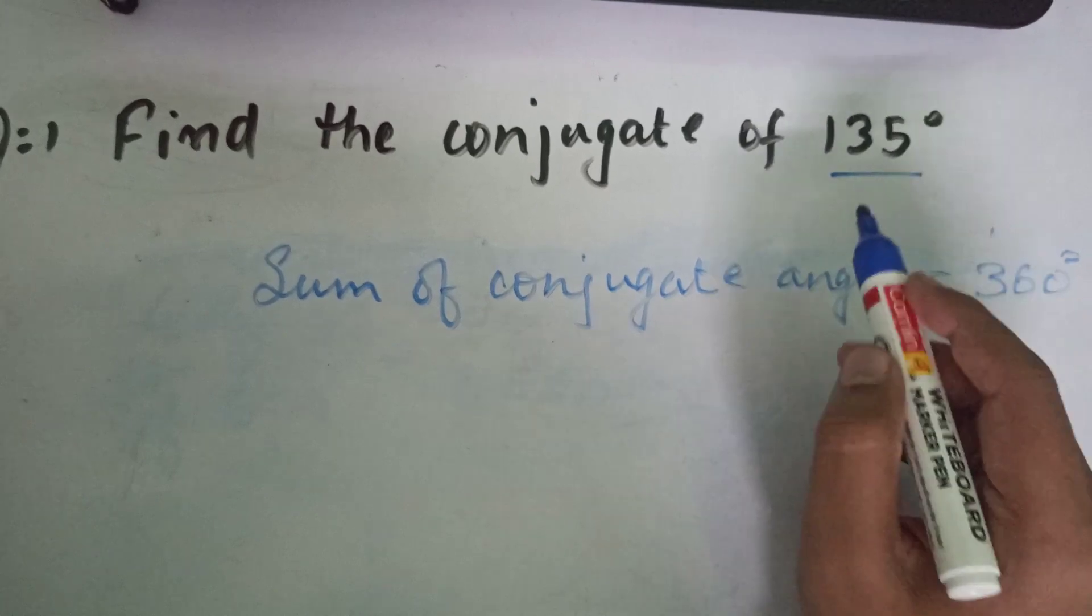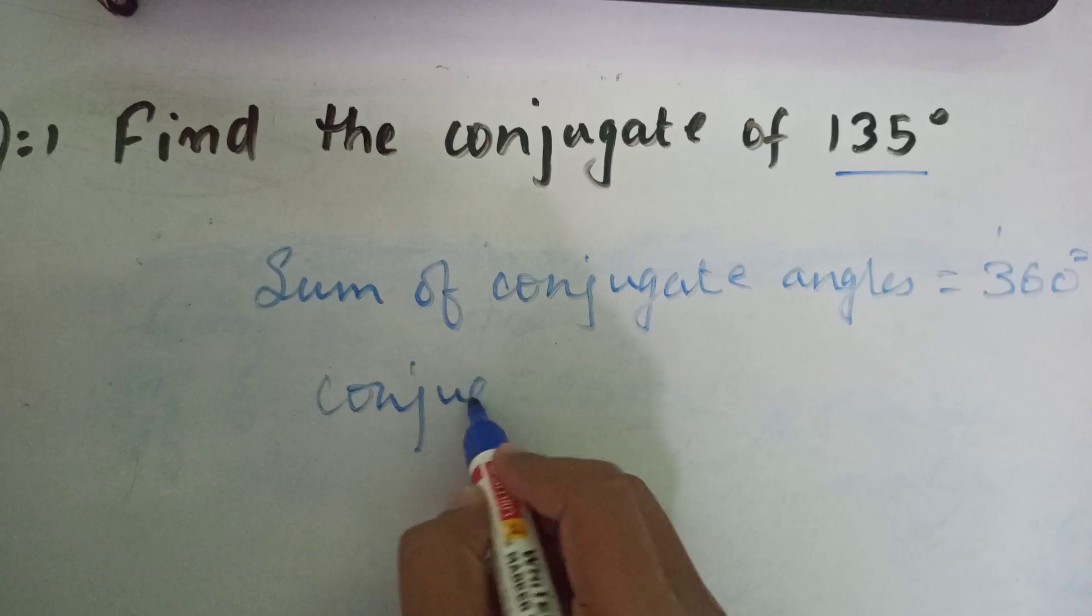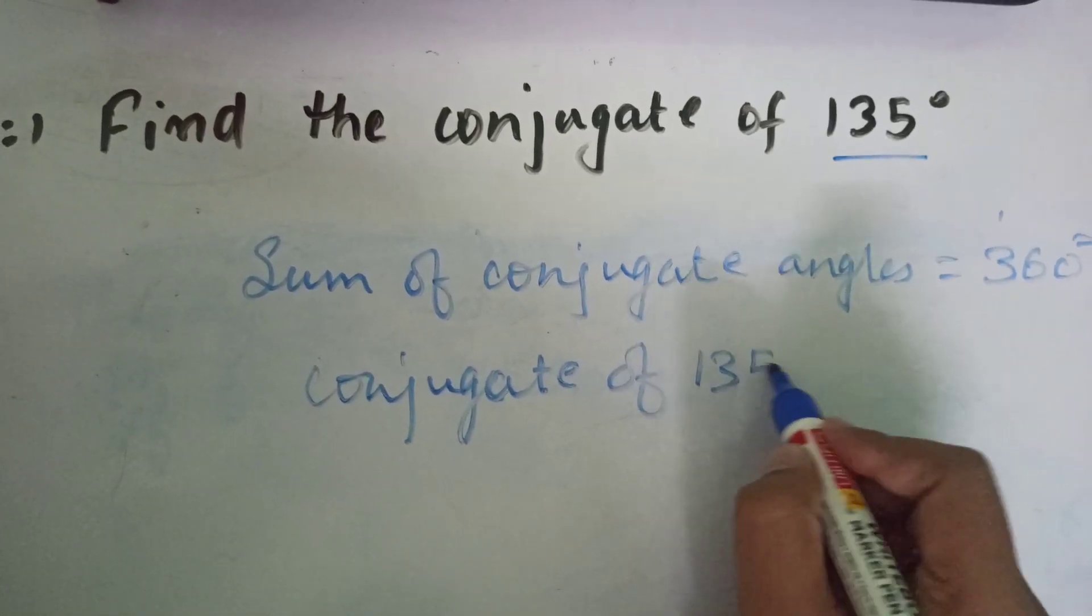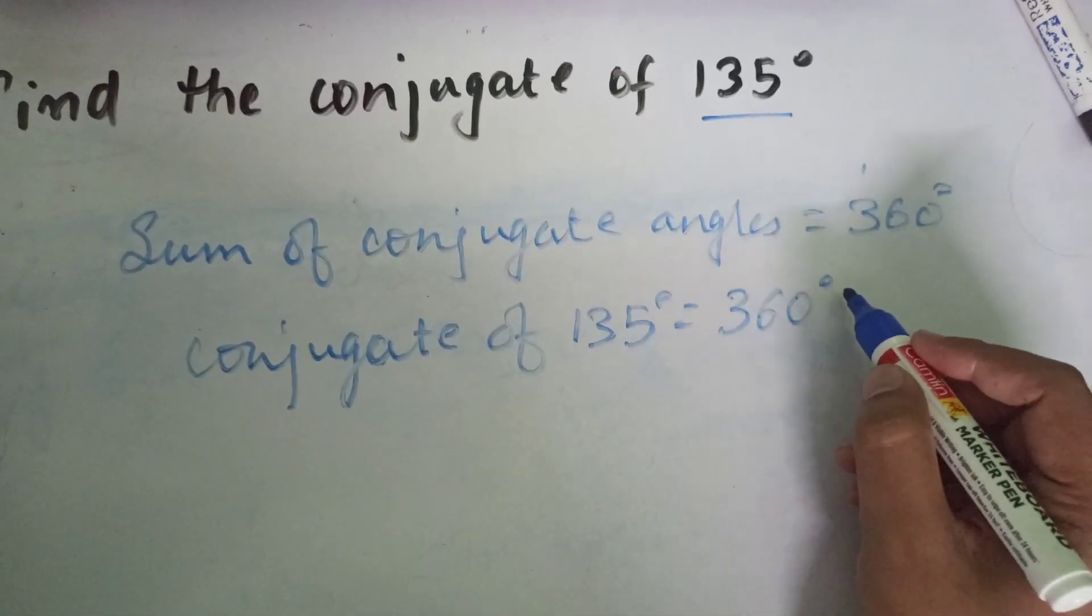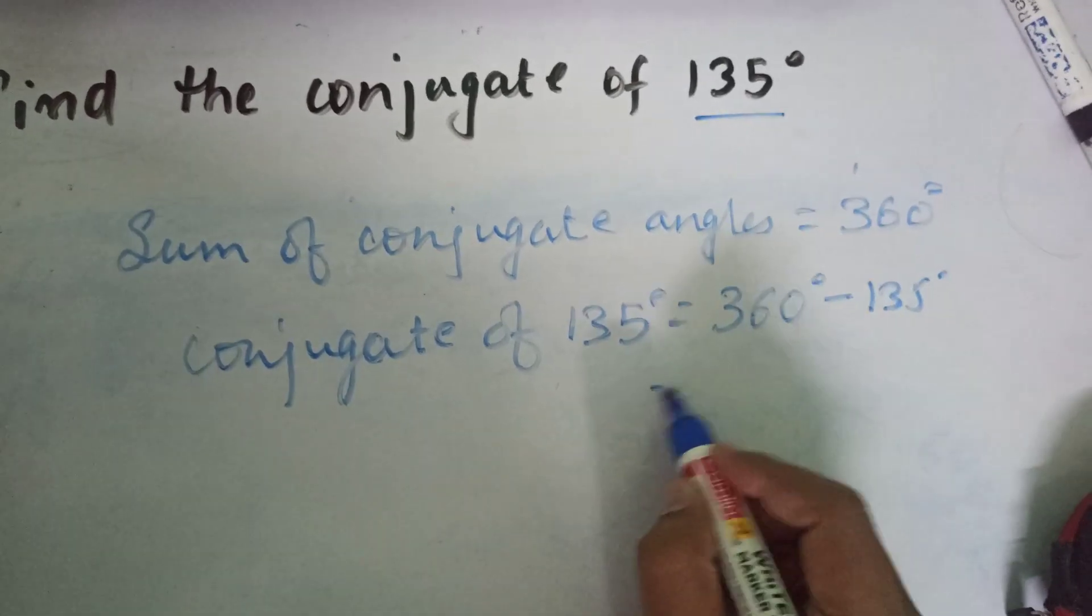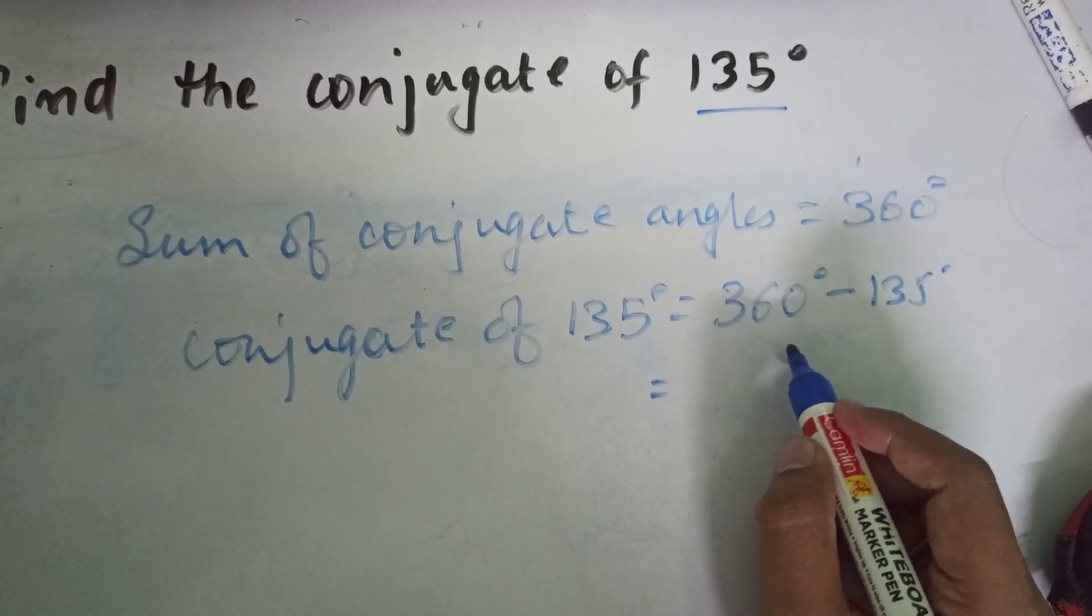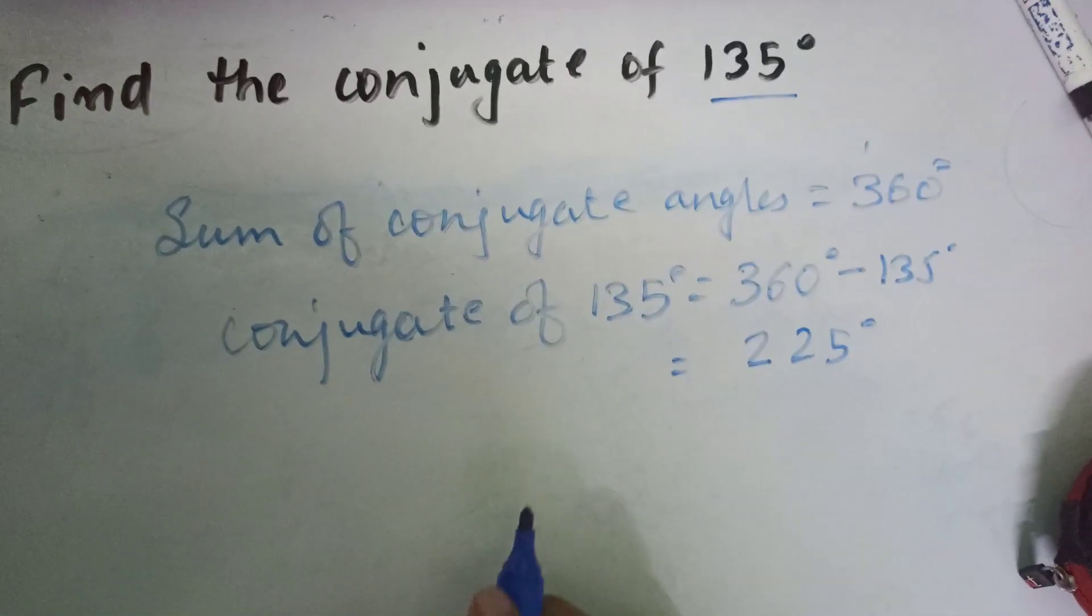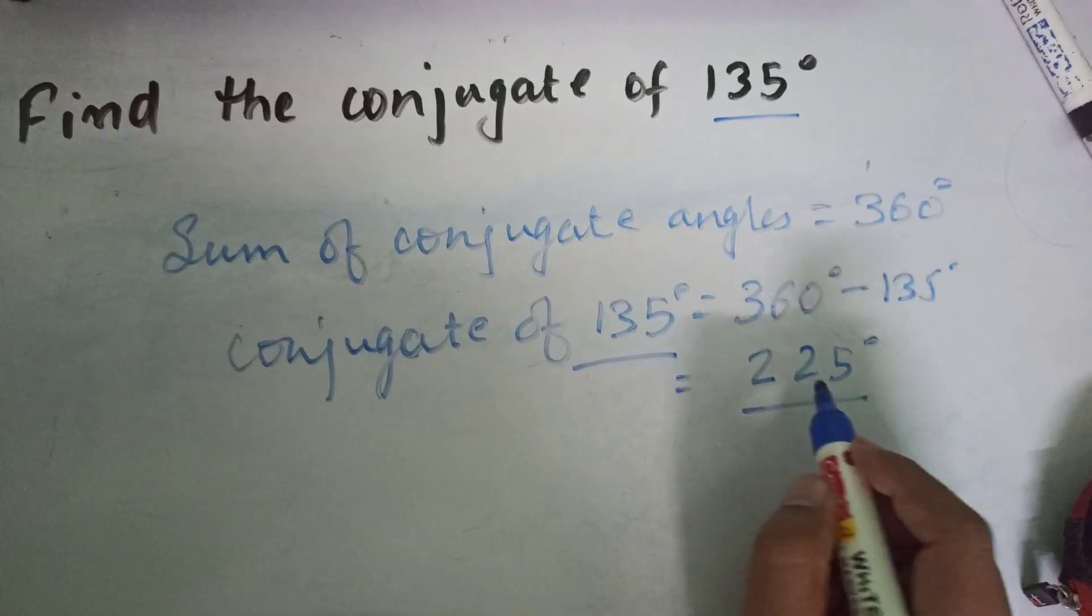If we need to find the conjugate of 135 degrees, then what you need to do is just subtract 135 from 360. If we subtract, what will we get? 225. So we can say that the conjugate of 135 degrees will be 225 degrees.